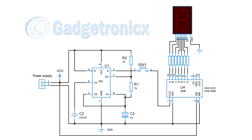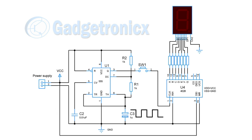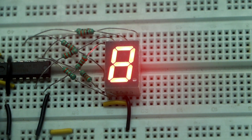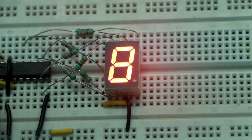The IC4026 is a counter and a 7-segment decoder. With each pulse input from the astable multivibrator, the 4026 IC increments the count from 0 to 9. This count is in turn displayed on the 7-segment display.